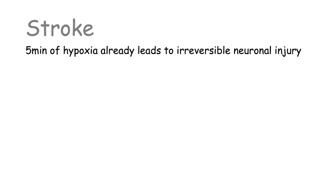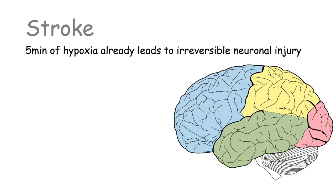Hello everyone and welcome. Today we're going to talk about the pathophysiology of stroke. The brain is an organ that needs a constant supply of oxygen, as only five minutes of hypoxia already leads to irreversible neuronal injury. The brain gets this oxygen through the arterial blood supply, and if anything disrupts that supply of blood to the brain, you usually have a stroke.